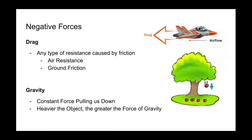Next we have the two negative forces, which are drag and gravity. Drag is literally any type of resistance caused by friction — so it could be air resistance, which is the most common form of drag, but even when a plane is trying to take off, the friction created by the ground is also drag. Gravity is also a negative force — it's the constant force that's always pulling us down, and the heavier the object, the greater the force of gravity, so airplanes have to battle against a really strong force of gravity.